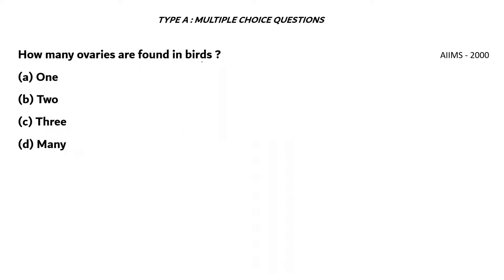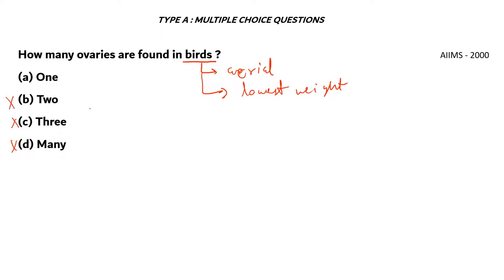Next question. How many ovaries are found in birds? A. 1, B. 2, C. 3, D. many. Birds have an aerial mode of life, so they should have the lowest weight possible. Having many ovaries would increase weight — option D is incorrect. Options B and C are comparatively heavier than option A. The right answer is option A — one. There is only one ovary present in birds.